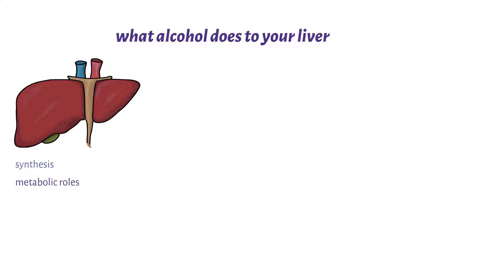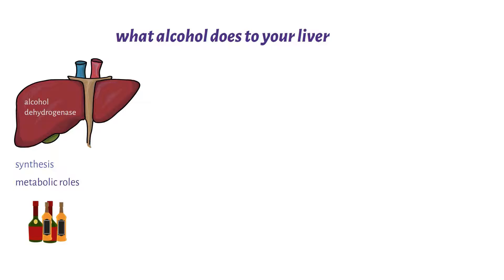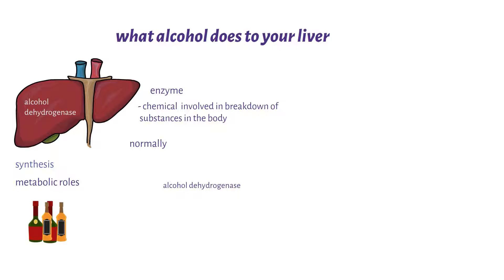One of the metabolic roles of the liver is the metabolism of alcohol. Alcohol metabolism in the liver involves the production of an enzyme called alcohol dehydrogenase. An enzyme is basically a chemical involved in the breakdown of substances in the body. Normally, alcohol dehydrogenase is involved in the metabolism of retinol, which is a form of vitamin A present in the body.